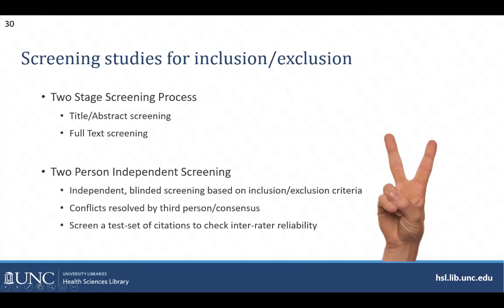Systematic reviews call for a two-stage, two-person screening process. First, you will look at the titles and abstracts of the studies to remove those that are obviously irrelevant just from looking at that limited information.